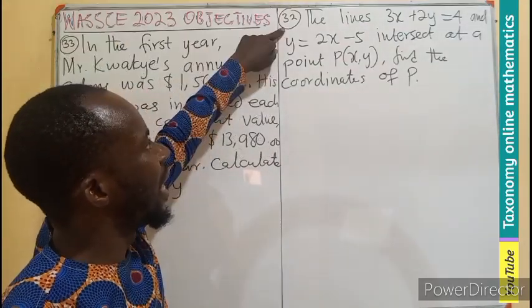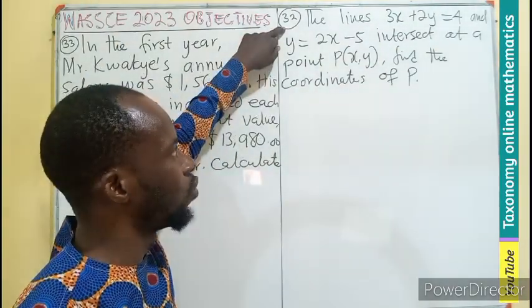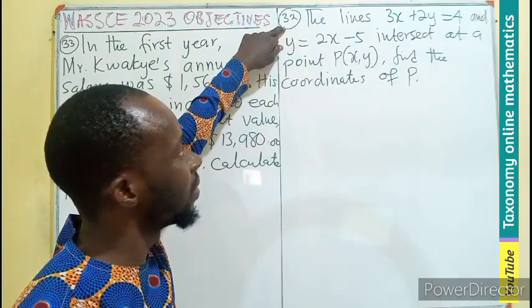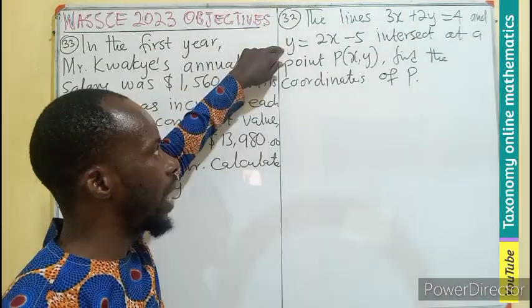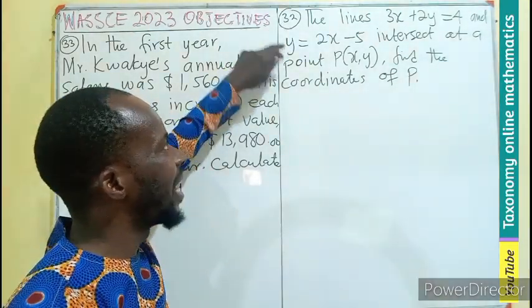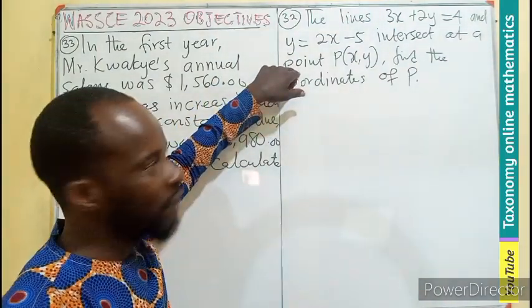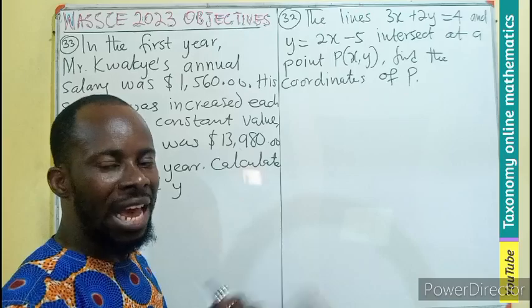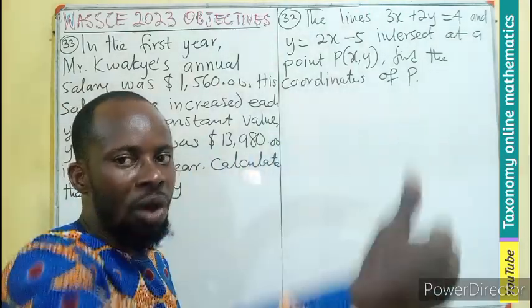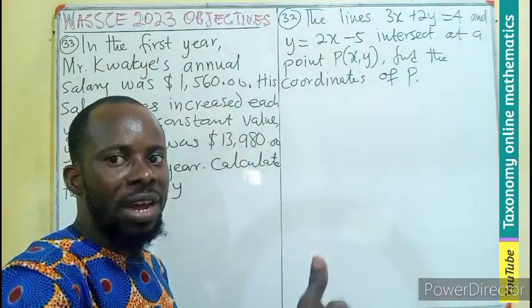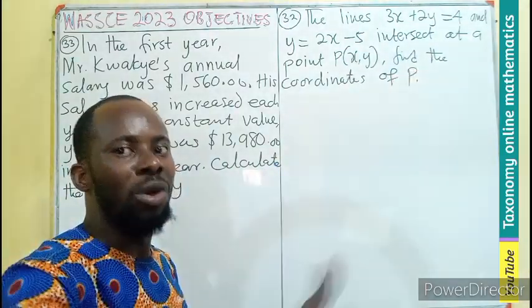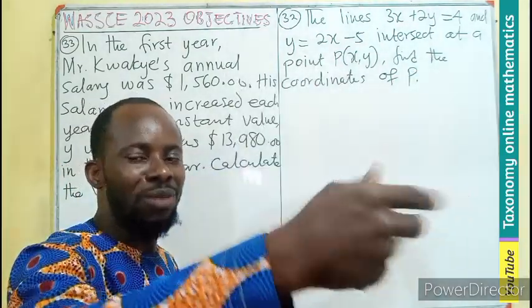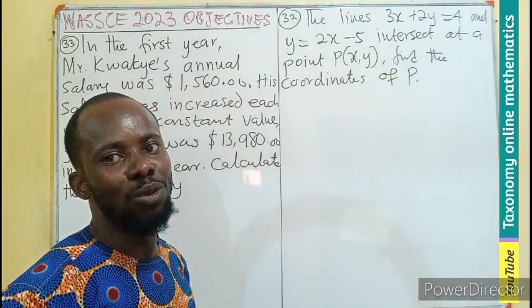Number 32. The lines 3x + 2y = 4 and y = 2x - 5 intersect at the point P(x,y). Find the coordinates of the point P. So if two lines intersect, then it means the solving of the two equations simultaneously,